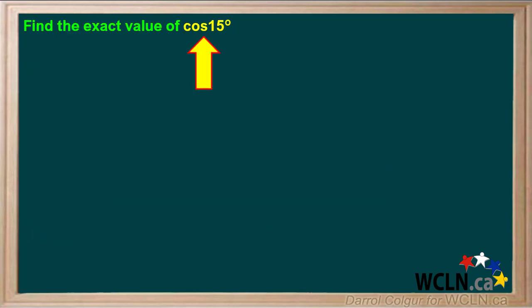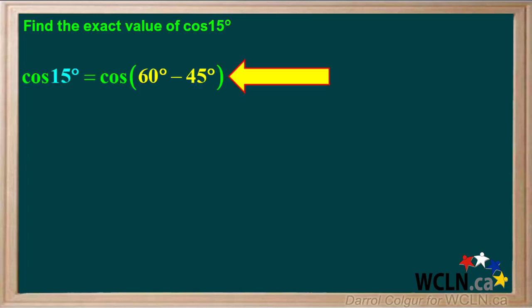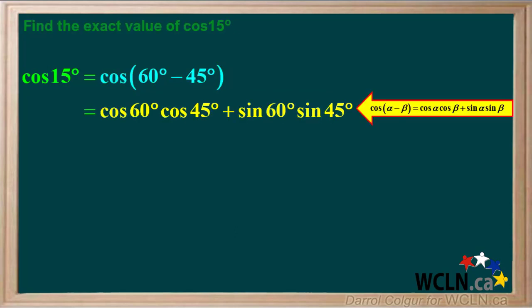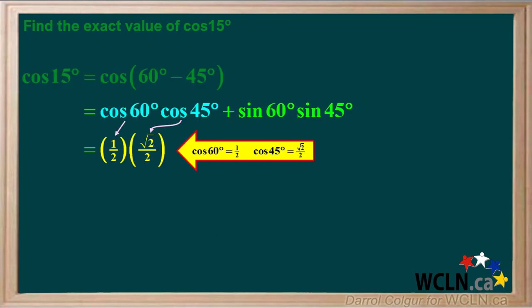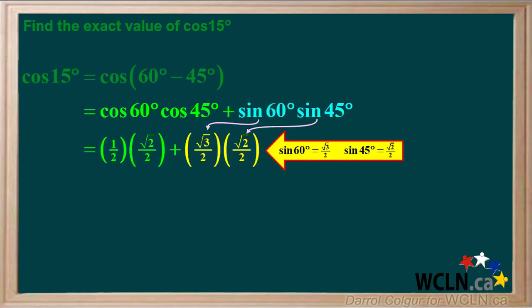Let's do another example. We're asked to find the exact value of the cosine of 15 degrees. We know that 60 minus 45 equals 15, so we can change cos 15° to the cosine of 60° minus 45°. We'll use the identity cos(α − β) = cos α cos β + sin α sin β, giving us cos 60° cos 45° + sin 60° sin 45°. cos 60° = 1/2, cos 45° = √2/2, sin 60° = √3/2, and sin 45° = √2/2.